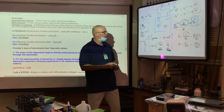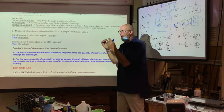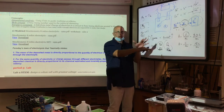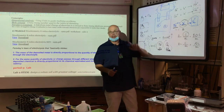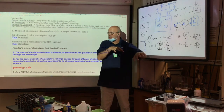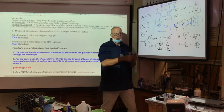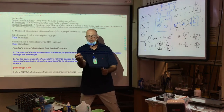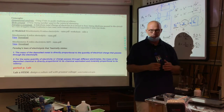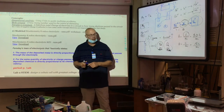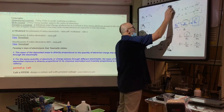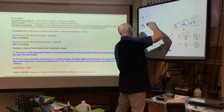Faraday couldn't calculate exactly how many grams of iron would be produced because he didn't know about electrons or moles. To make that calculation, we need the mole concept. Let me introduce it briefly here — we'll spend more time on it, but here it is in a nutshell.